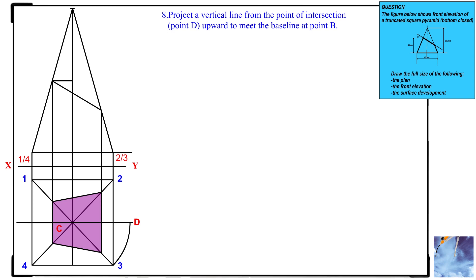Step 8: Project a vertical line from the point of intersection, point D, upward to meet the baseline at point B.